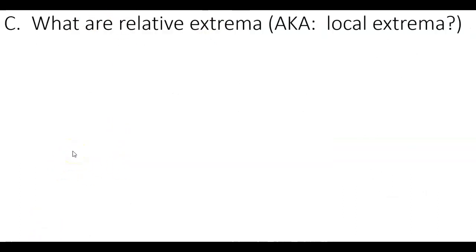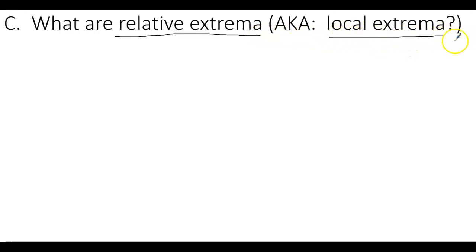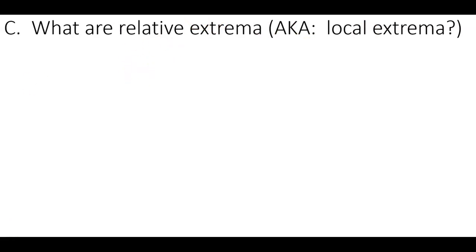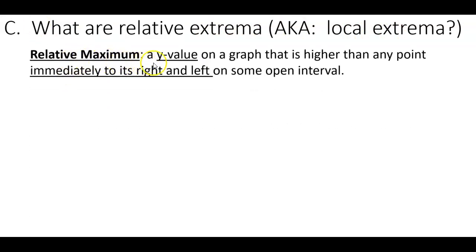Now let's talk about the other type: relative extrema. They're also sometimes called local extrema — just be aware of that. A relative maximum is a y value in a graph that's higher than any point immediately to its right or left. This is different from the absolute max, which is the highest point overall. The relative max is just asking: is there a point somewhere on the graph that's higher than all the points right next to it? It's a local phenomenon — right in the immediate neighborhood.